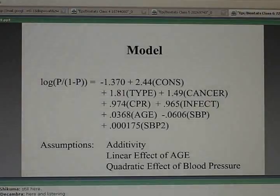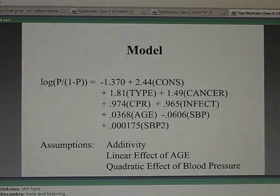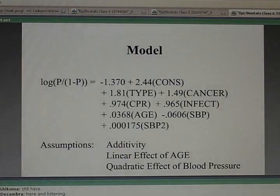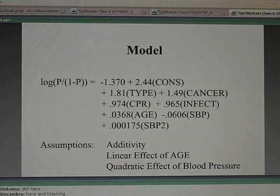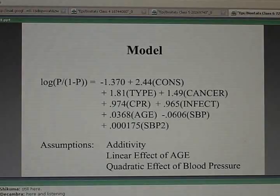For every factor though, notice there's only one coefficient of type, only one coefficient of age, and one coefficient of having an infection. We're also assuming what we call additivity. We're assuming that each risk factor has only one effect on the outcome, regardless of the level of the other risk factors. So regardless of your age, regardless of your blood pressure, regardless of your consciousness level, the effect of having cancer is captured by that 1.49 that we talked about earlier. That is assumed to be the same, regardless of the levels of all these other things.